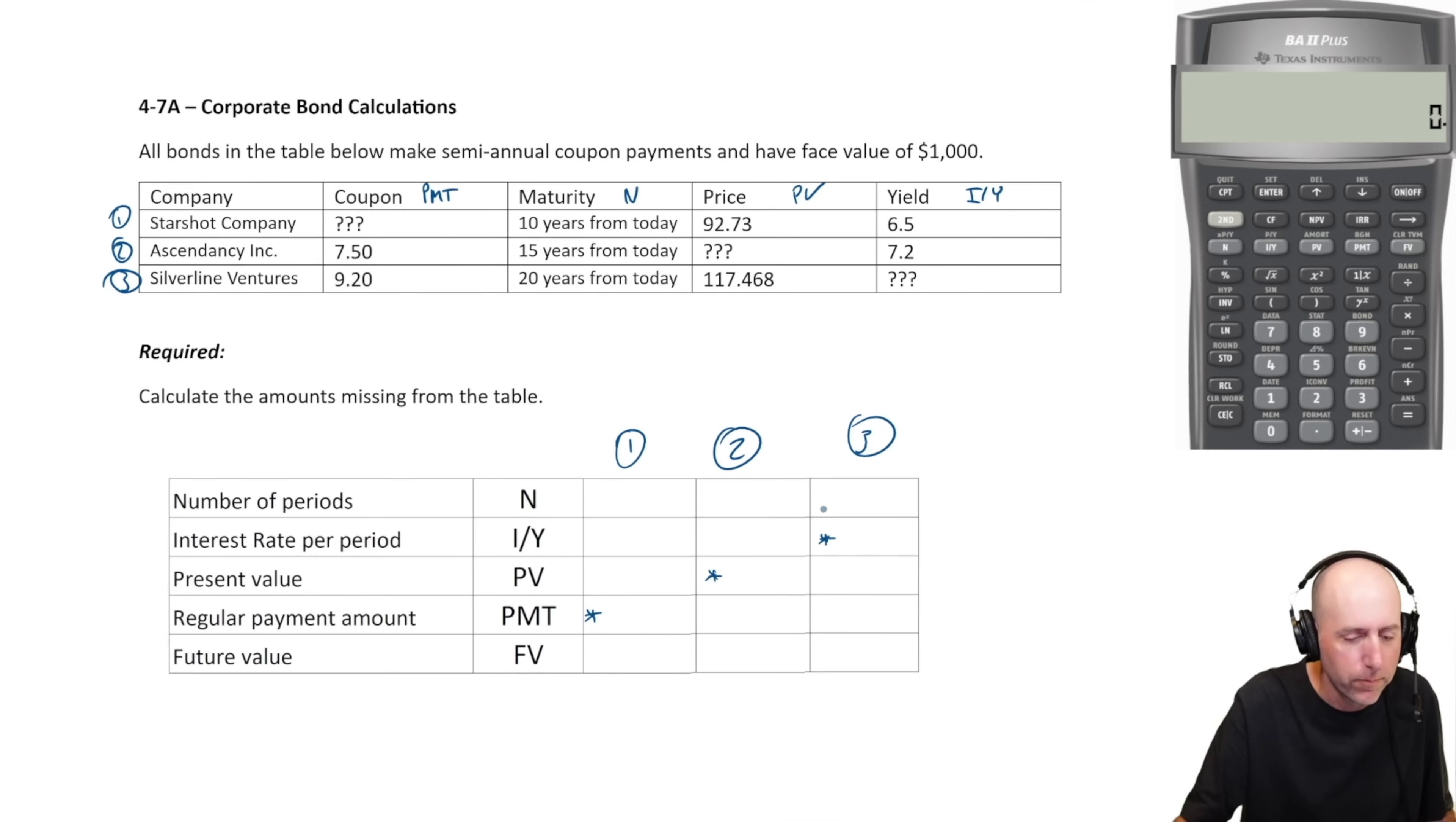Let's start with the first company, Starshot. The number of periods here is 10 years, so that's 20 compounding periods. Our I/Y is 6.5% per year, that's 3.25% per six months because these are semi-annual coupon payments. We got to convert everything into semi-annual data. So 10 years, that's 20 six-month periods. 6.5% per year is 3.25% per six months.